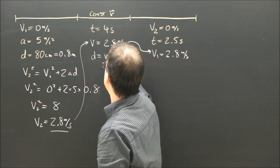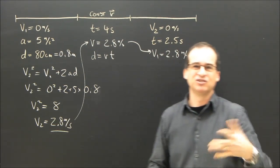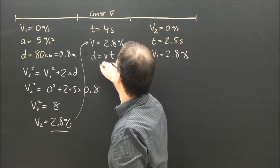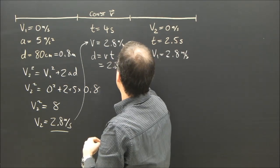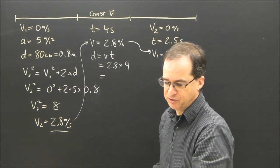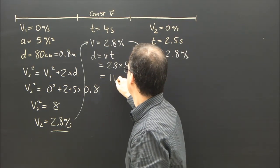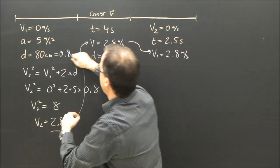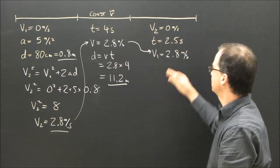d equals v times t. Uniform motion v equals d over t, rearrange it, d equals v times t. So it's going to be 2.8 times t, which is 4, and that works out to 11.2 meters. So 0.8 meters in the first section, 11.2 meters in the second section.